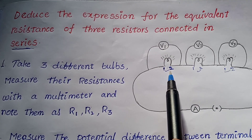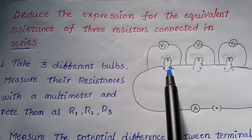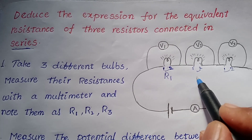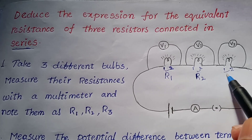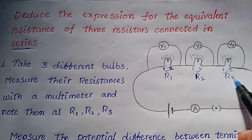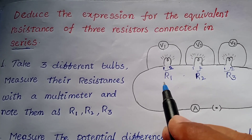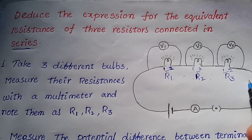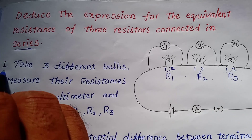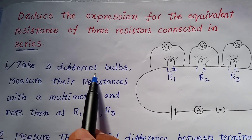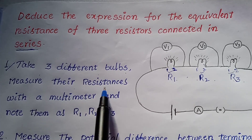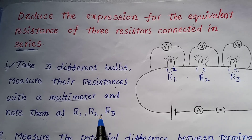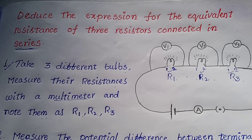I am going to measure the resistance of the first bulb. The first bulb is R1, the resistance of the second bulb is R2, and the resistance of the third bulb is R3. With the help of a multimeter, take three different bulbs, measure the resistances and note them as R1, R2, and R3.